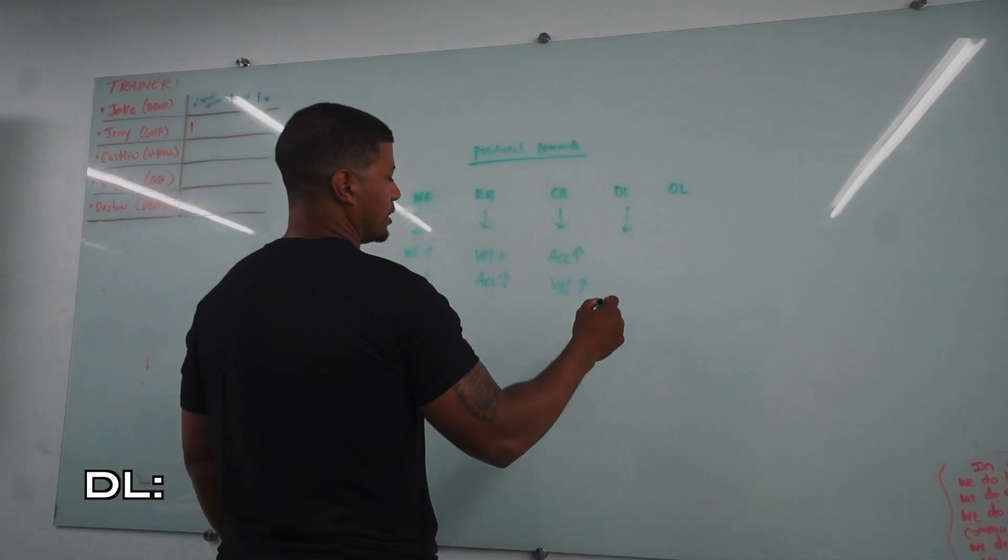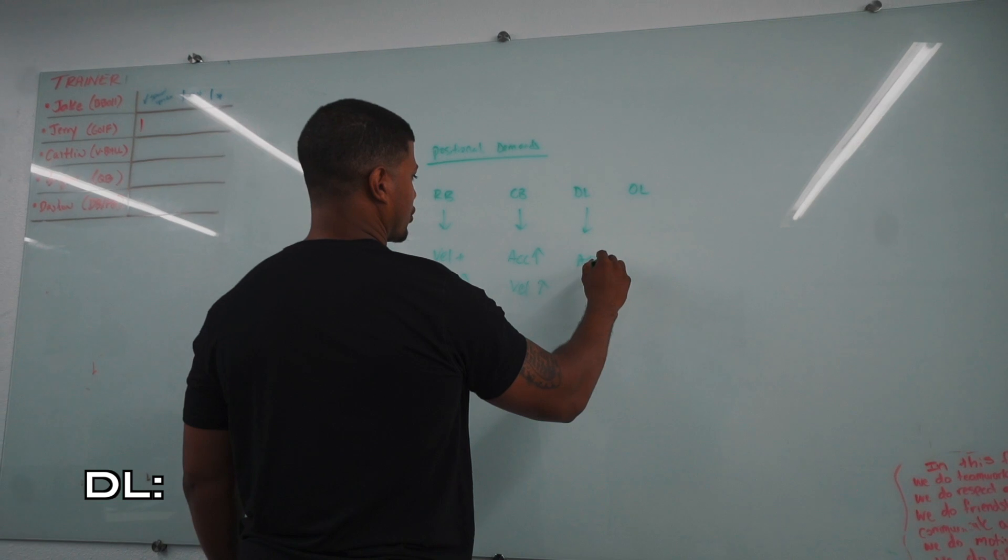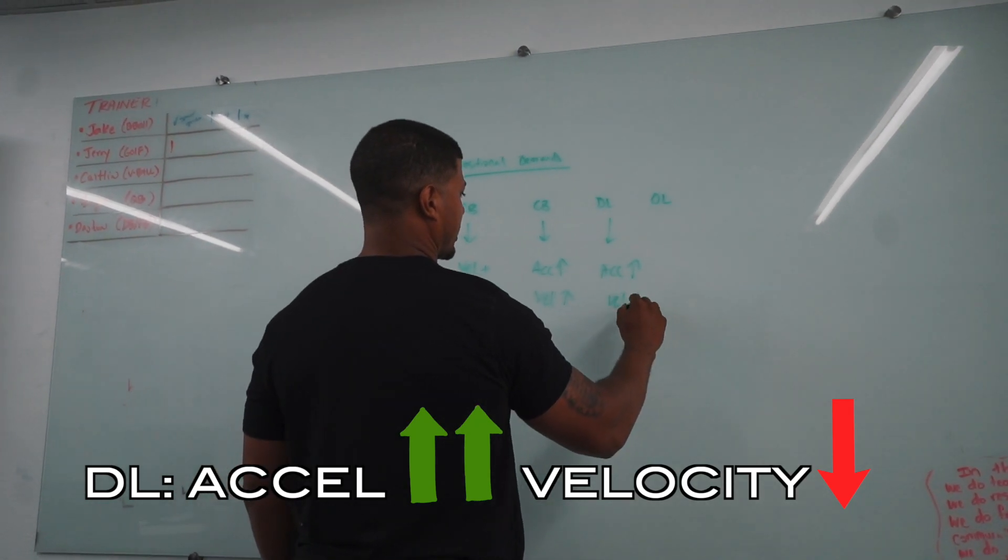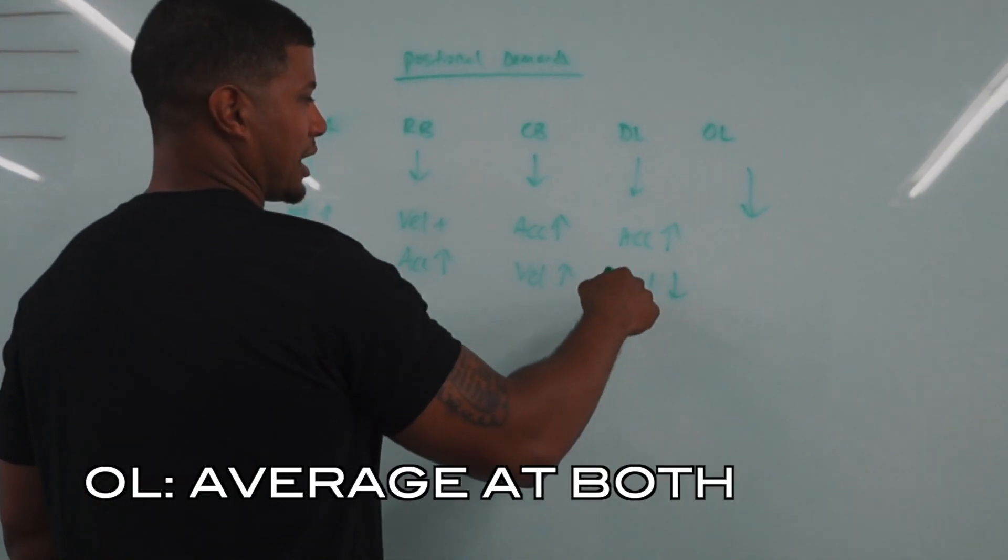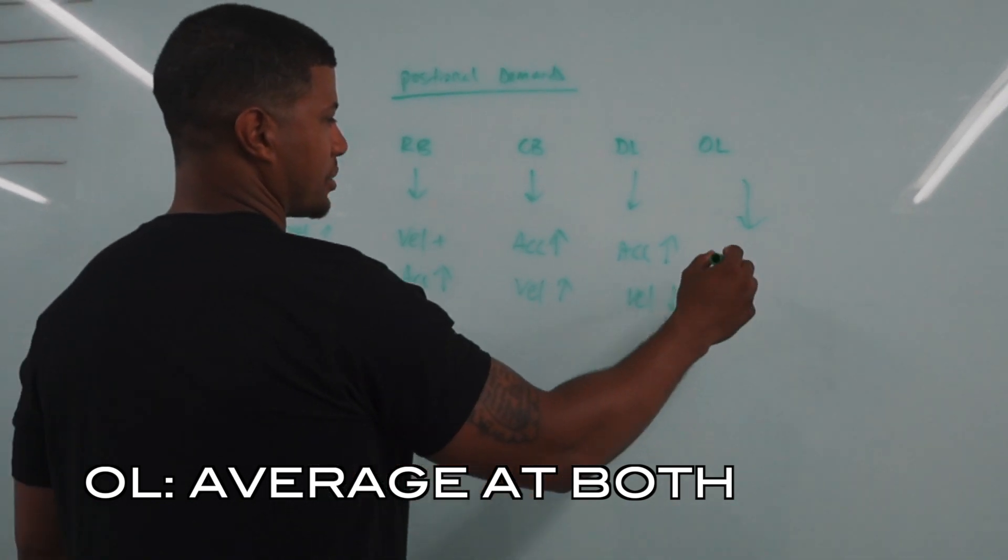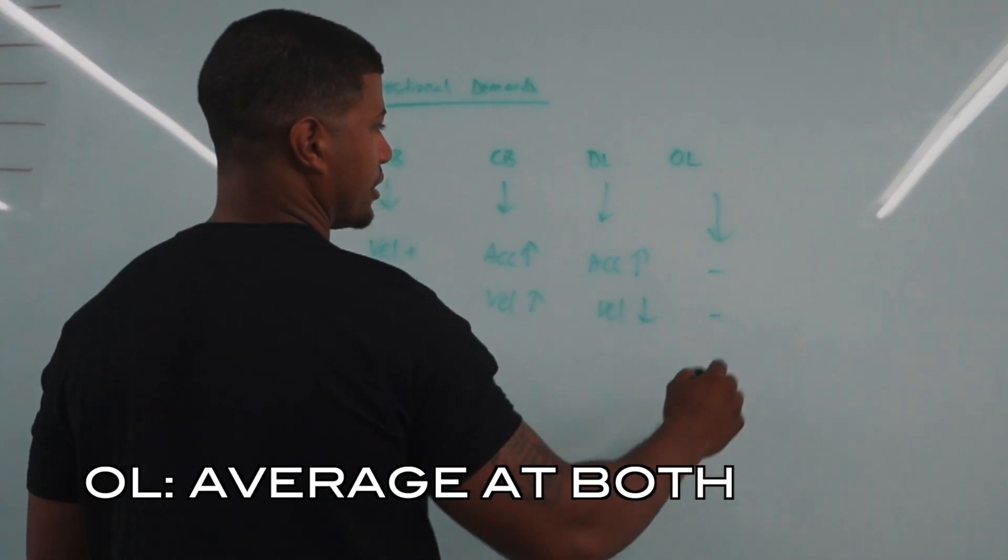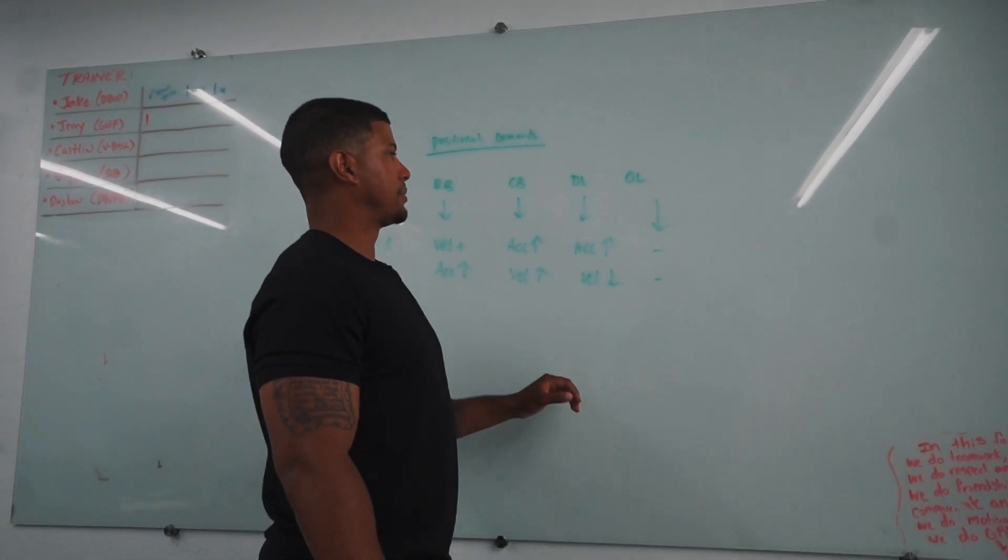Then I look at D-line. D-line has to have crazy excel, but velocity is probably not going to be very good. O-line is probably not going to have too many of these qualities. It's probably going to be average at both. So for O-line, this might just be more of a stimulus type thing.